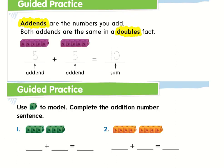Now these two addends are always going to be the same number when they are a double fact. So addend number one, as you can see, is the number five; addend number two is also five; and then our sum for five plus five is going to be ten.